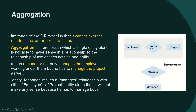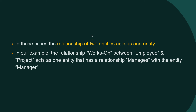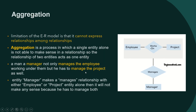Suppose there are two entities: the first one is called employee and the second one is called project. You can take a company as the enterprise. There exists a relationship between employee and project — the employee may work on a project. So the relationship we took here is called 'works on.'